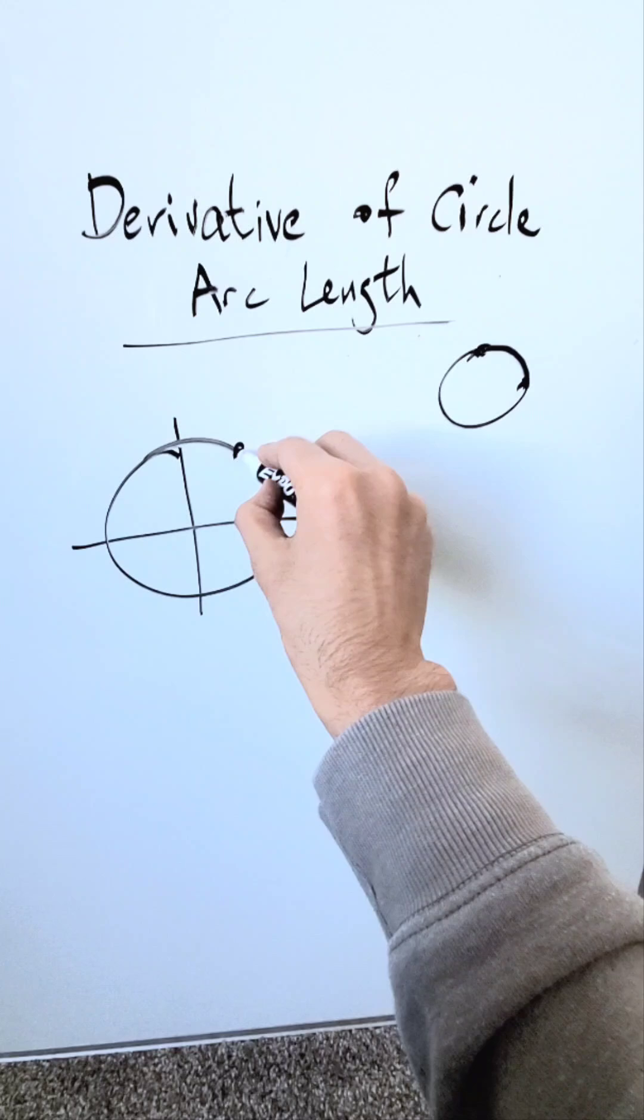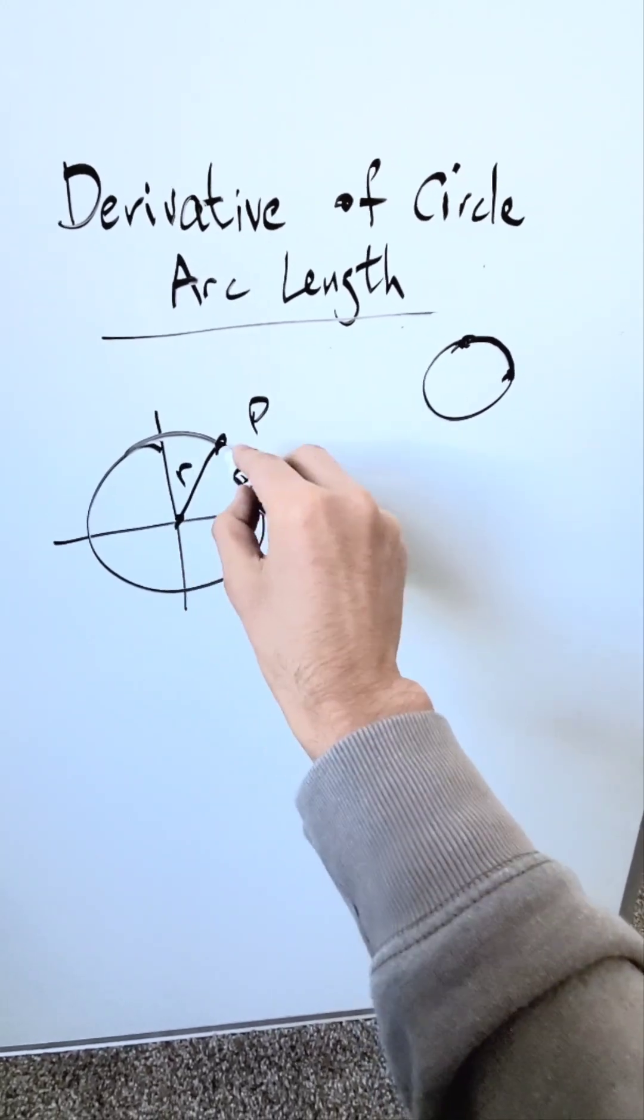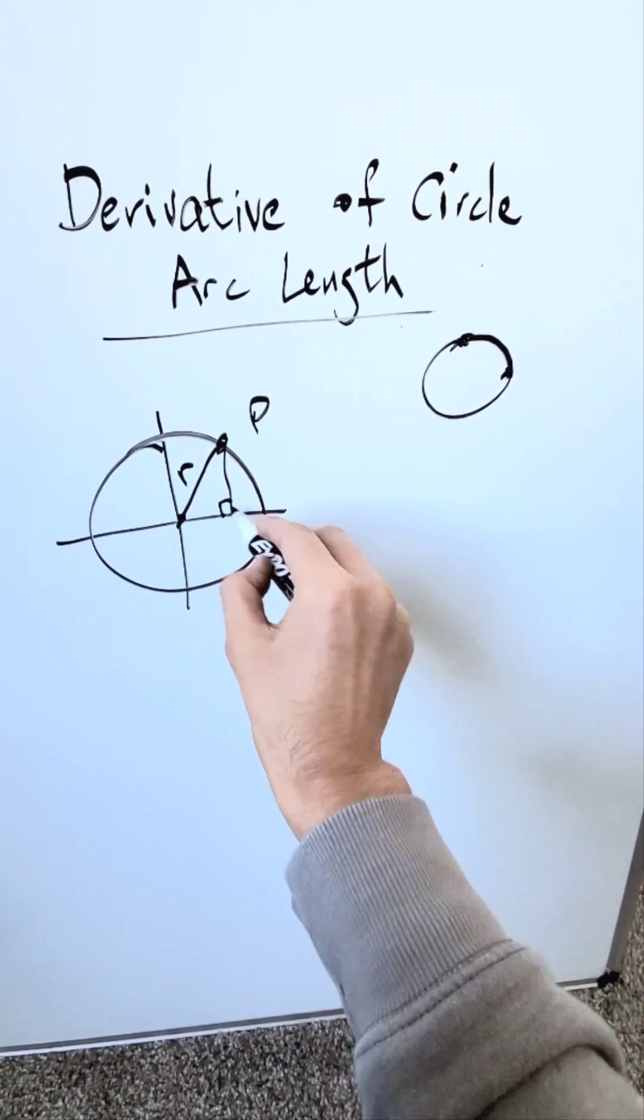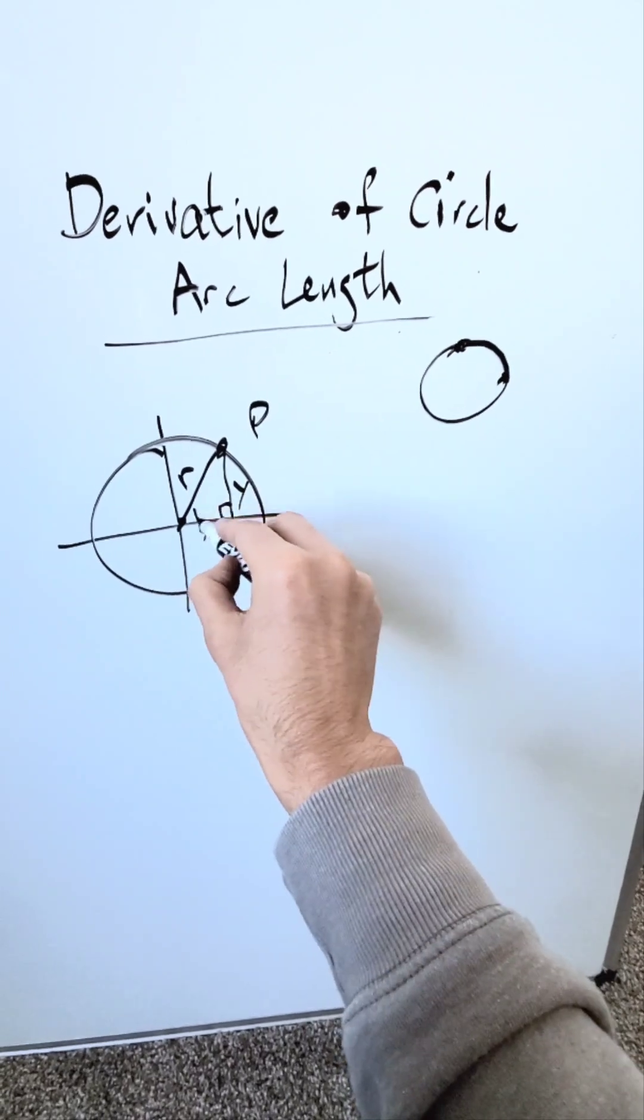Using a unit circle, I have a specific point. I extend a radius from the origin with a line down and a line across. Here's my x, here's my y, and a certain angle.